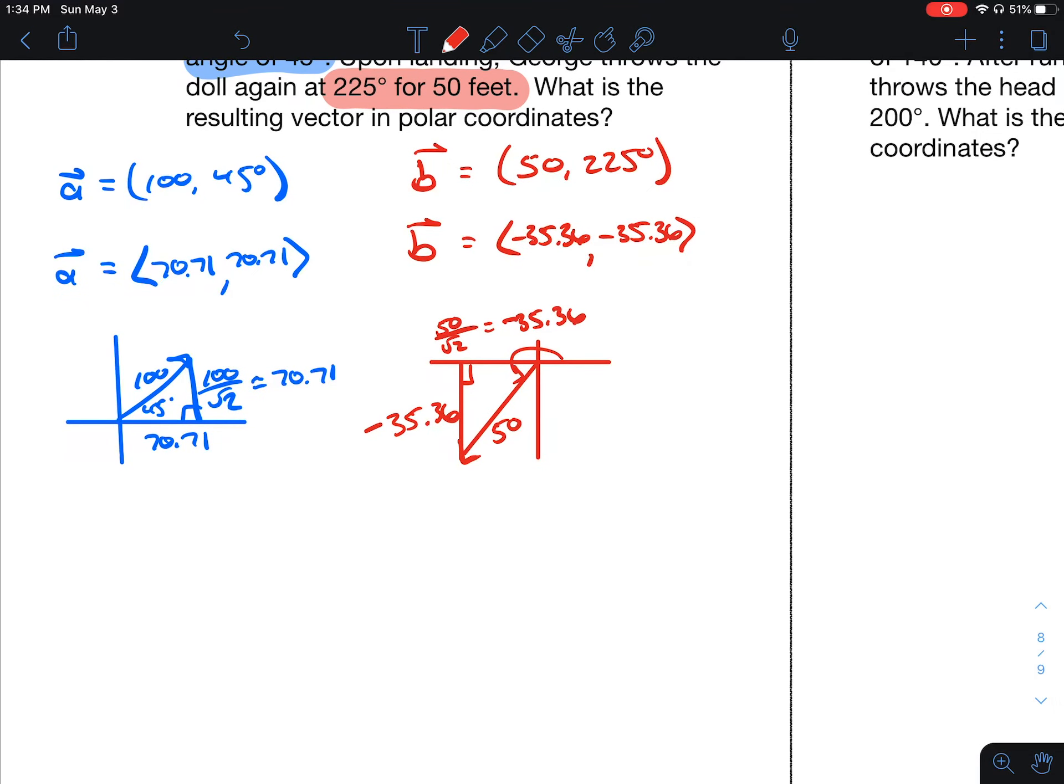So the resultant vector is going to have components 70.71 plus negative 35.36,